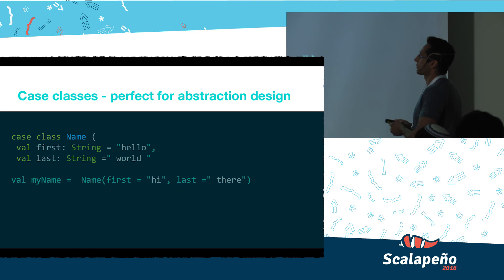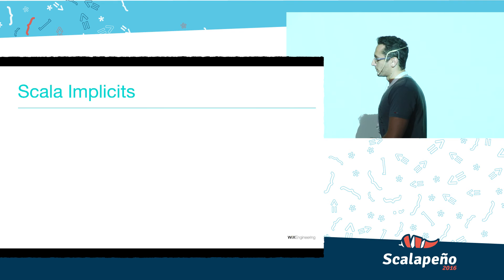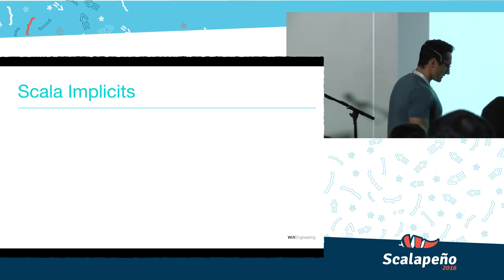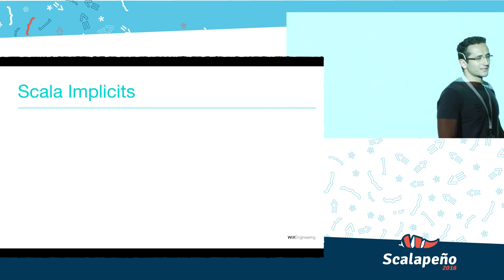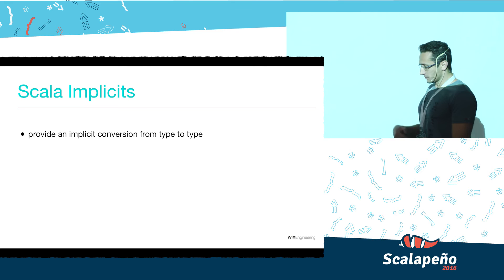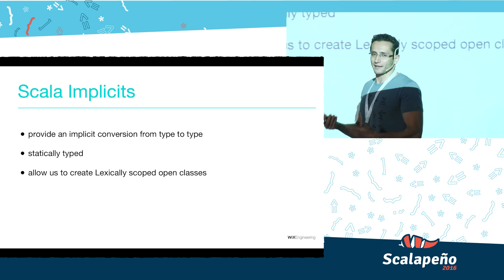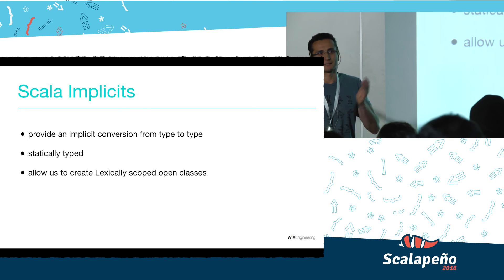Another great thing Scala offers is implicits. You've probably heard the word 'implicit' like ten times already today, but bear with me one more time. Scala implicits are basically methods and functions that are implicitly wired by the Scala compiler by searching for a matching signature in the current scope. They provide implicit conversion from type to type, they are statically typed, and they allow us to create lexically scoped open classes — meaning we can extend the syntax of existing classes we don't own.